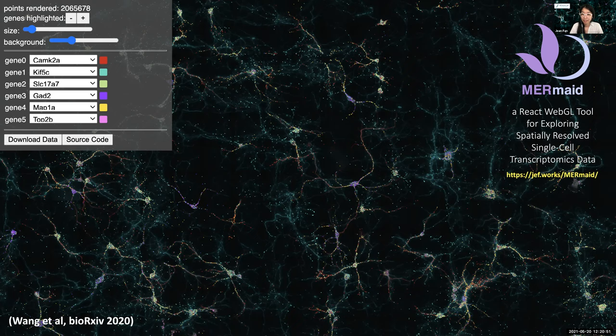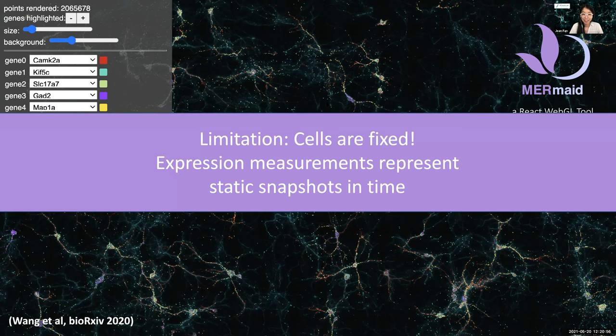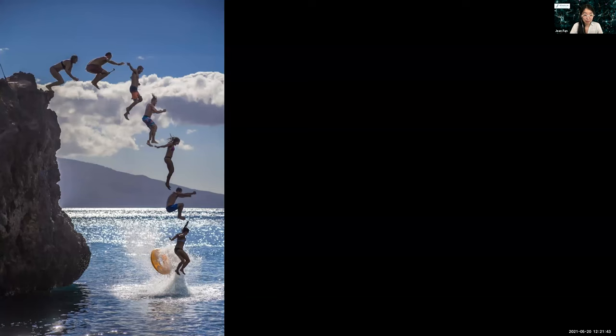The main limitation I wanted to discuss is that these cells are fixed, so the expression measurements represent static snapshots in time. Ideally, in the glioblastoma experiment, we would like to follow glioblastoma cells as they interact with macrophages and watch them upregulate mesenchymal genes over time. Unfortunately, that's currently not possible — but that doesn't necessarily mean all dynamic information is lost.